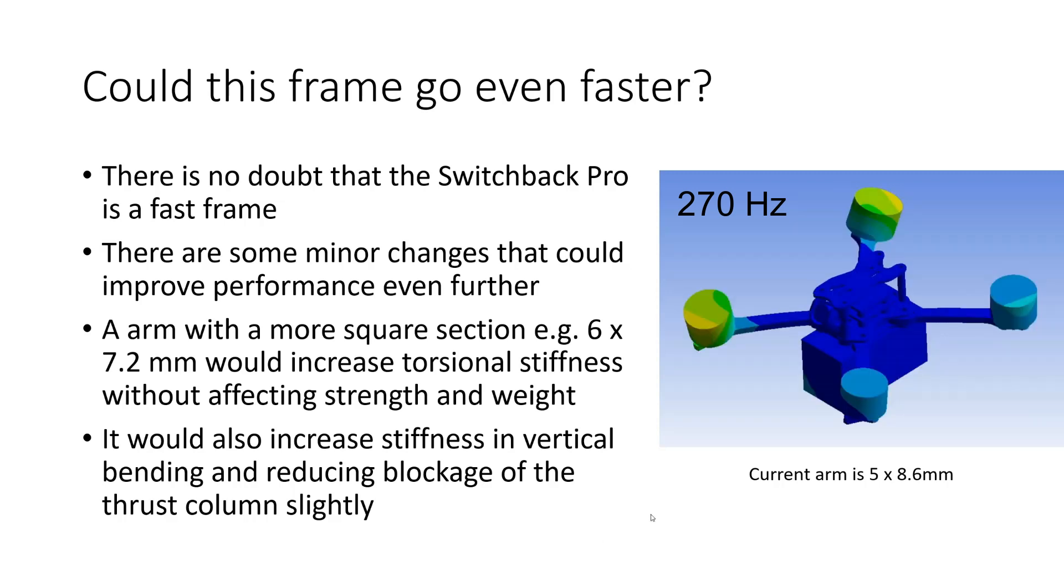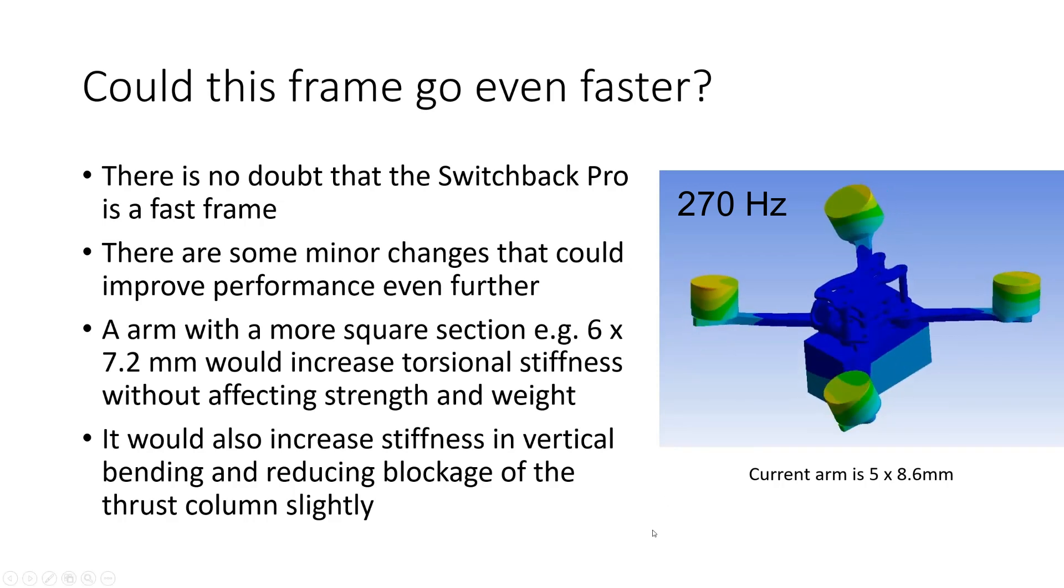So how would a square arm section affect this mode. Now this mode here of the frame was the one that was most troublesome to my eye and we can see that if we were to make the arm stiffer in torsion that would mean that the motors would find it more difficult to twist on the end of the arm in the way that they are doing here. And also if the arm was a little bit thicker, 6 millimeters rather than 5 millimeters, you'd also see that it would be more difficult for the motors to bend up and down as you see they're doing in this resonant mode. And so that change would really make a big difference to what I think is the most challenging resonant mode of this frame.